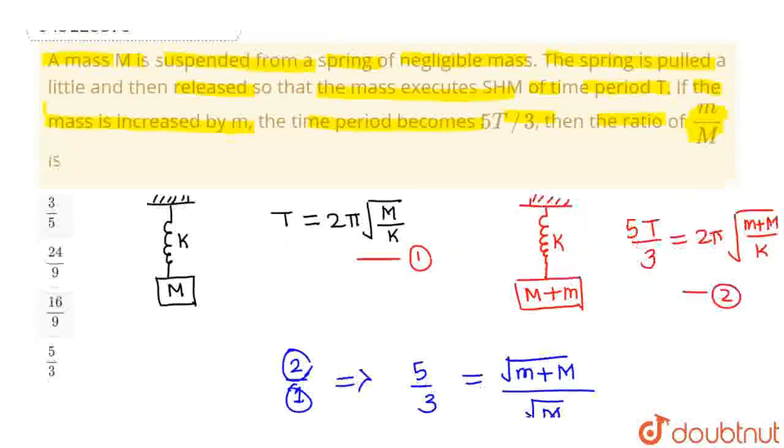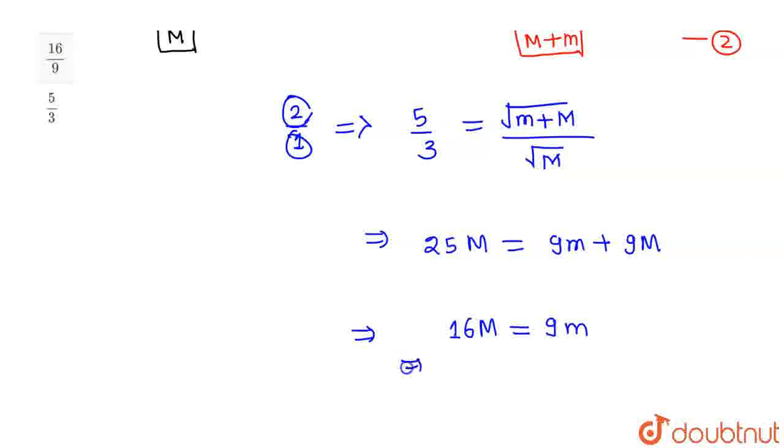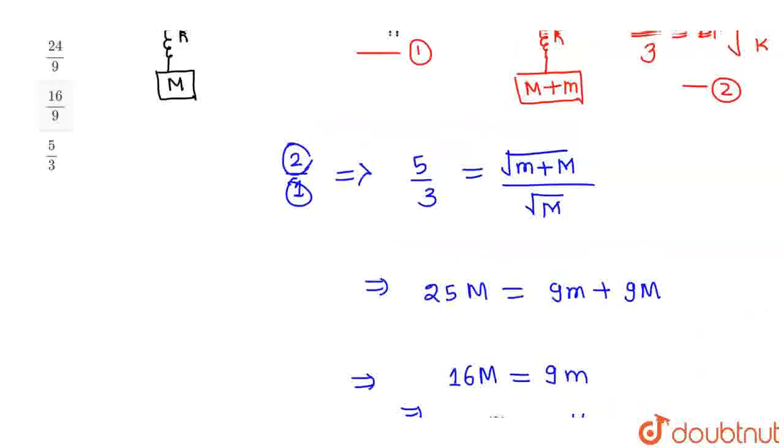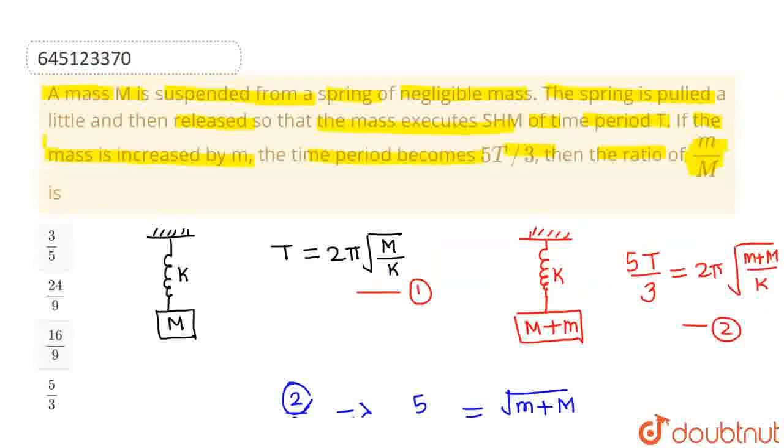Now, since we need to find out the ratio of small m by capital M, from here I will be getting m/M as 16/9. This is the required ratio which is given in option 3. So option 3 is correct and all other options are incorrect. I hope you understood. Thank you.